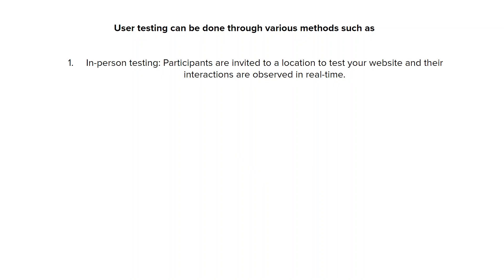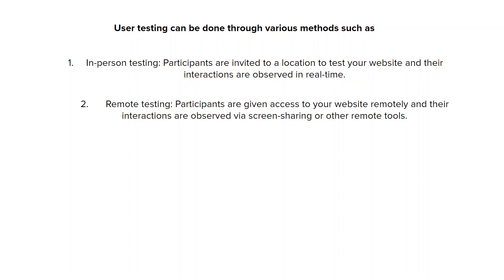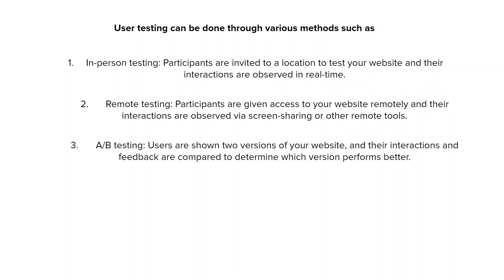In in-person testing, participants are invited to a location to test your website and their interactions are observed in real time. Then there's remote testing, where participants are given access to your website remotely and their interactions are observed via screen sharing or other remote tools. Then there's A/B testing, where users are shown two versions of your website and their interactions and feedback are compared to determine which version performs better.